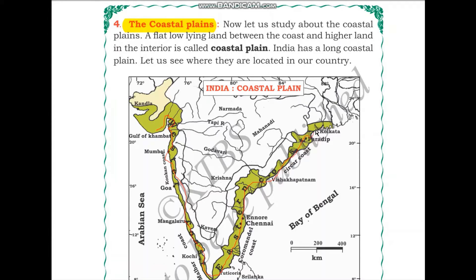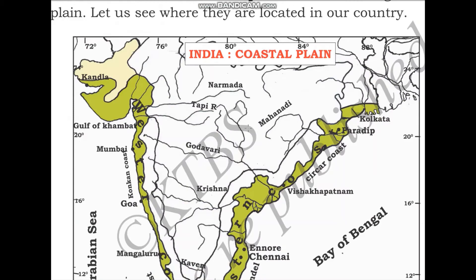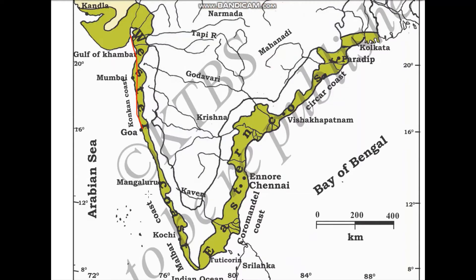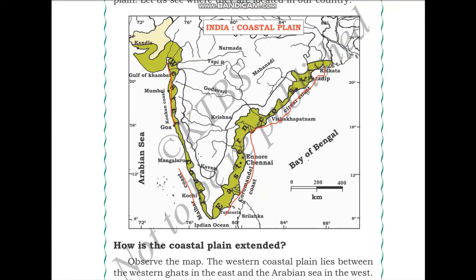The coastal plains are shown in green color on the map. This is a flat land located in between two areas: number one, the high-lying Western Ghats, and number two, the ocean. India has a long coastal plain. We can see in green color the western coastal plains and the eastern coastal plains along the coastline of our country.